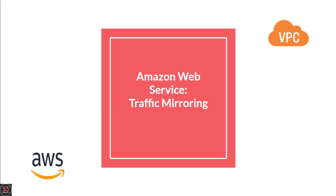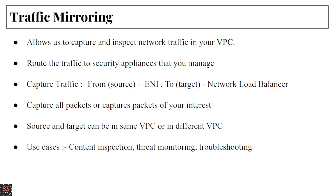Good morning and welcome back to part 16 of our VPC playlist. In today's video we are going to learn what is traffic mirroring. Traffic mirroring is an additional security feature in AWS that allows us to capture and inspect network traffic in our VPC. Let's say we have a VPC and we want to capture and inspect the traffic — we can do that using traffic mirroring.